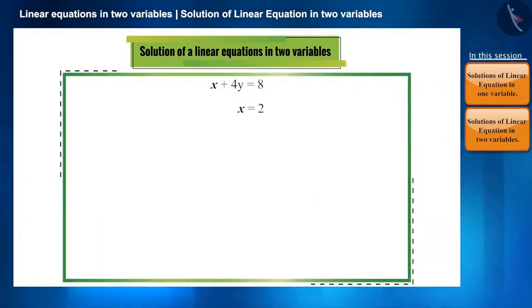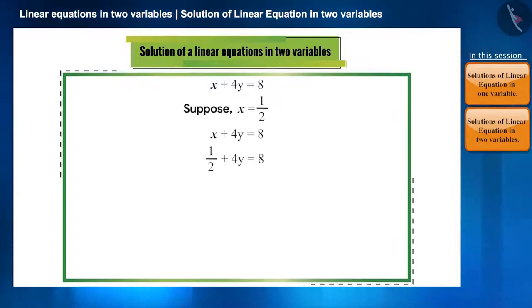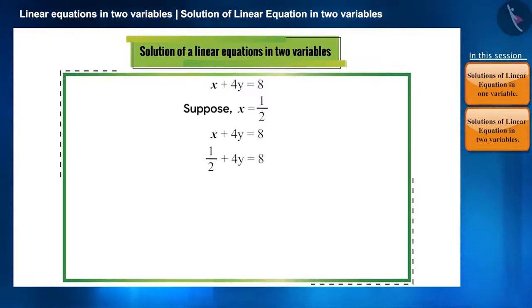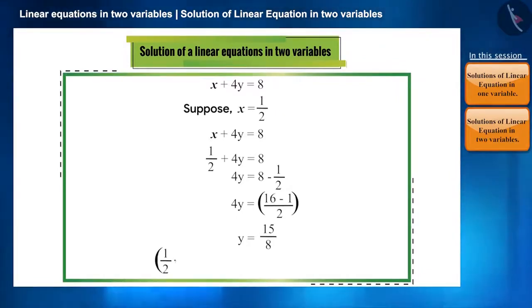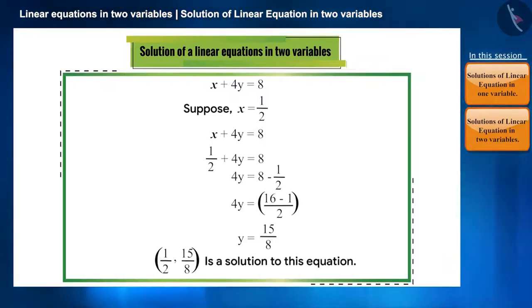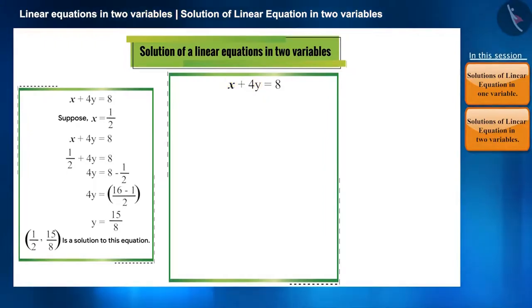Let's take any value of x as per our choice — let's take x equal to 1 by 2. Substituting x equal to 1 by 2 into the equation x plus 4y equals 8 will make it a linear equation in one variable. When we solve this, we get y equal to 15 by 8. So 1 by 2 comma 15 by 8 is another solution. Similarly, for any value of x, we can find the corresponding value of y, or by taking any value of y, we can find the corresponding value of x.